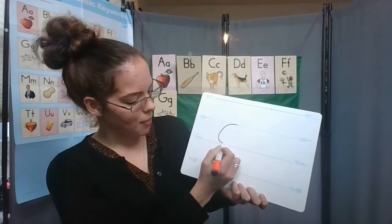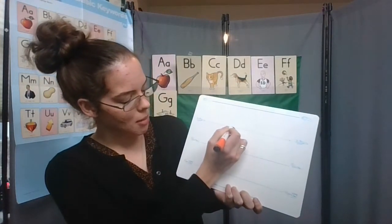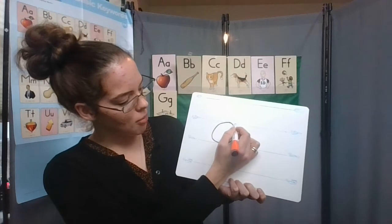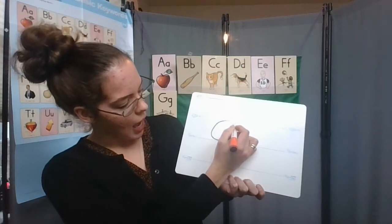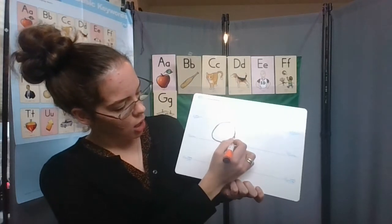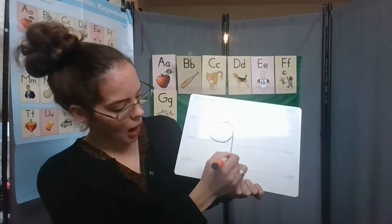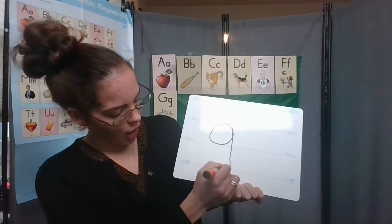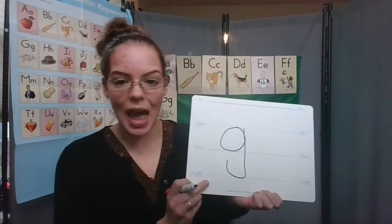Curve down to the bottom, curve back up to the middle, and then take your marker or pencil and start at the middle, draw a straight line past the bottom, and then curve up. That's little g.